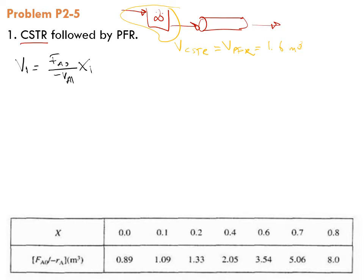Let's write the design equation for CSTR: V_1 equals F_A0 divided by minus r_A1 times X_1. We have the volume and we want to calculate the conversion. However, we cannot calculate the conversion directly because this term is also unknown to us, so we need to do trial and error.